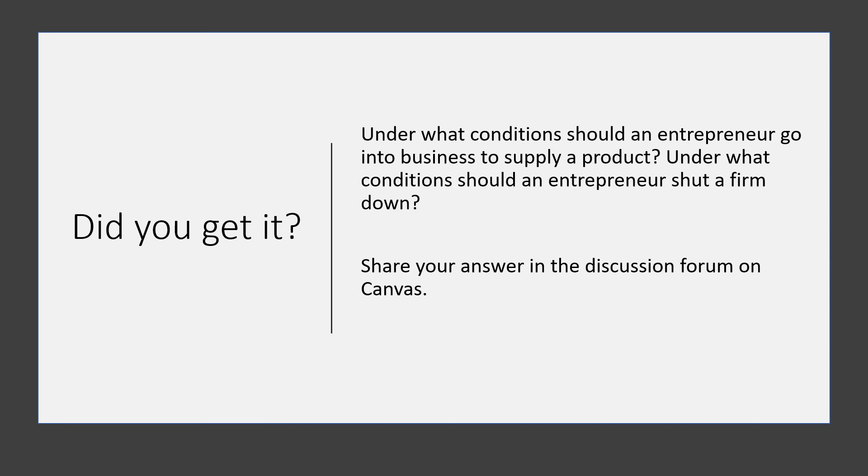The decision to start a business and the decision to shut down are based on different criteria. The decision to go into business hinges on the ability to make profit — total revenue must exceed total cost, taking both fixed and variable costs into account. But a firm should shut down only if it cannot cover its variable costs. As a result, some firms incurring losses will continue producing in the short run because total revenue exceeds variable cost. Many automakers, for example, have remained in business after months or years of being unprofitable because their total revenue still exceeded their variable costs.